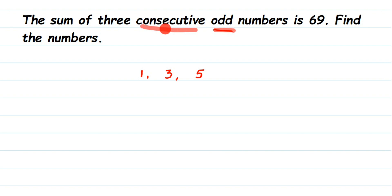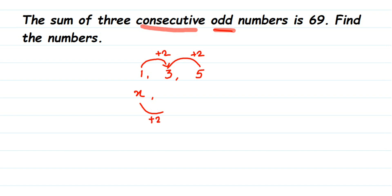If the first odd number is x, what will be the second odd number? Take this example: from 1 to 3, you add 2. Similarly, if you add 2 to an odd number you get the next odd number — 3 plus 2 is 5. So you keep adding 2 to get the next odd number. If the first odd number is x, then x plus 2 is the second consecutive odd number. To get the third, add 2 again: x plus 2 plus 2 gives x plus 4.